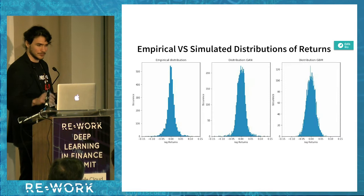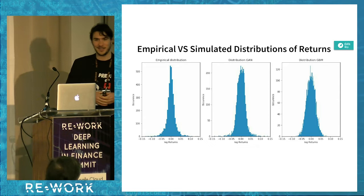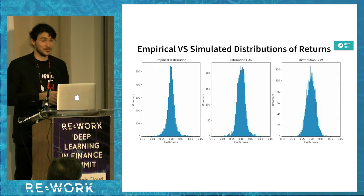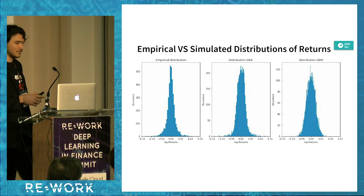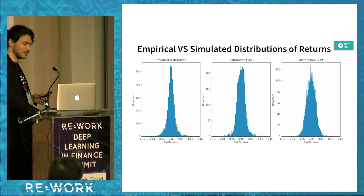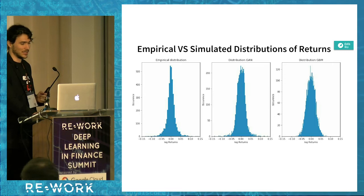We visually inspected the results — a bit like inspecting GAN output for images, but less entertaining since we were looking at distributions. It was quite interesting to see that the GAN was able to capture some interesting features: the empirical distribution is more skewed and also not purely symmetrical — and this was with a very simple architecture.